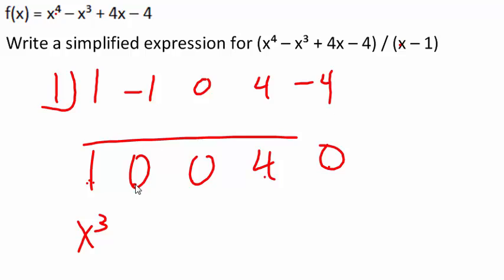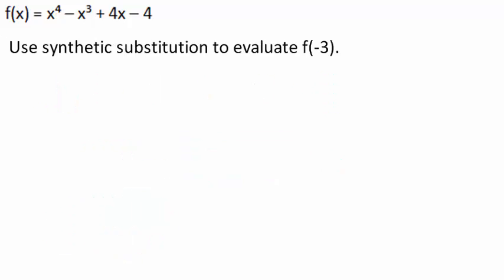Plus 0x squared, plus 0x, and then plus 4, with no remainder. Now, finally, they ask us to use synthetic substitution to evaluate f of negative 3. That means negative 3 goes directly into the box.